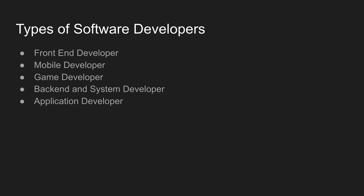Next is application development. Application development involves collaboration between front-end and back-end developers. For example, Microsoft PowerPoint is an application. When you develop such an application, you use front-end technology and back-end technology together. Application developers decide what features need to be implemented and build them.